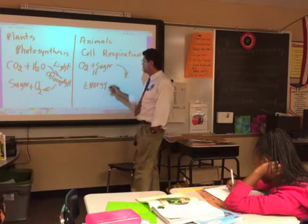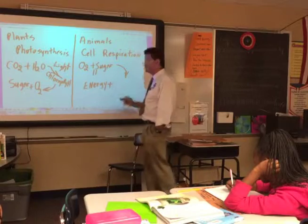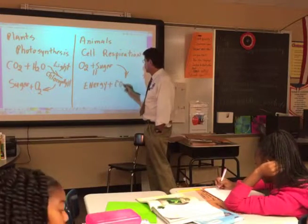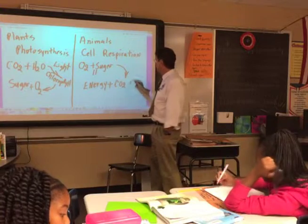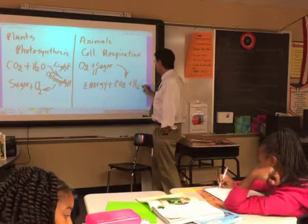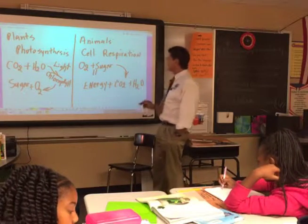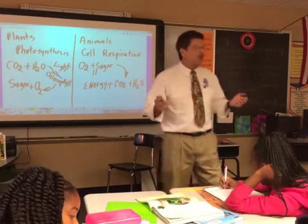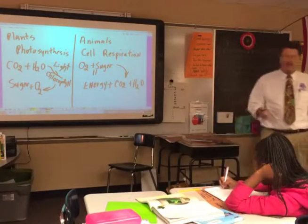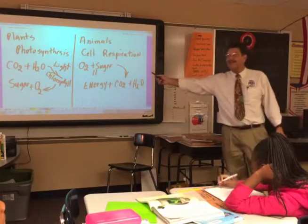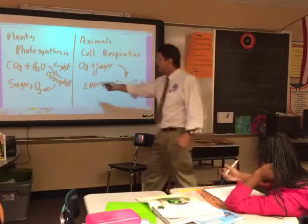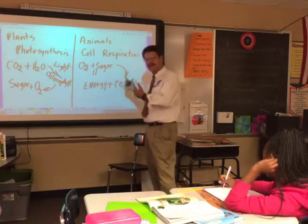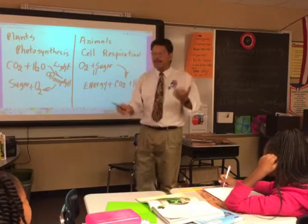In cellular respiration, we also need water. The process produces energy, plus CO2, plus H2O. So we actually give off water and CO2. Who needs water and CO2? The plants. And what do plants give off? Sugar and oxygen — which we need. It's a balance.